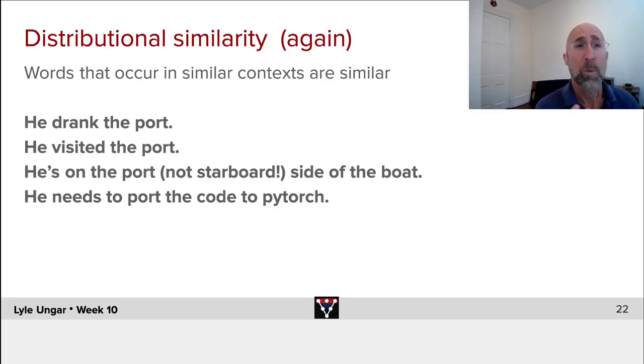So what did we say last time? Distributional similarity is the fact that words that occur in similar contexts are by definition similar. Similar in terms of their embeddings by construction and similar, we hope, in terms of their meaning.